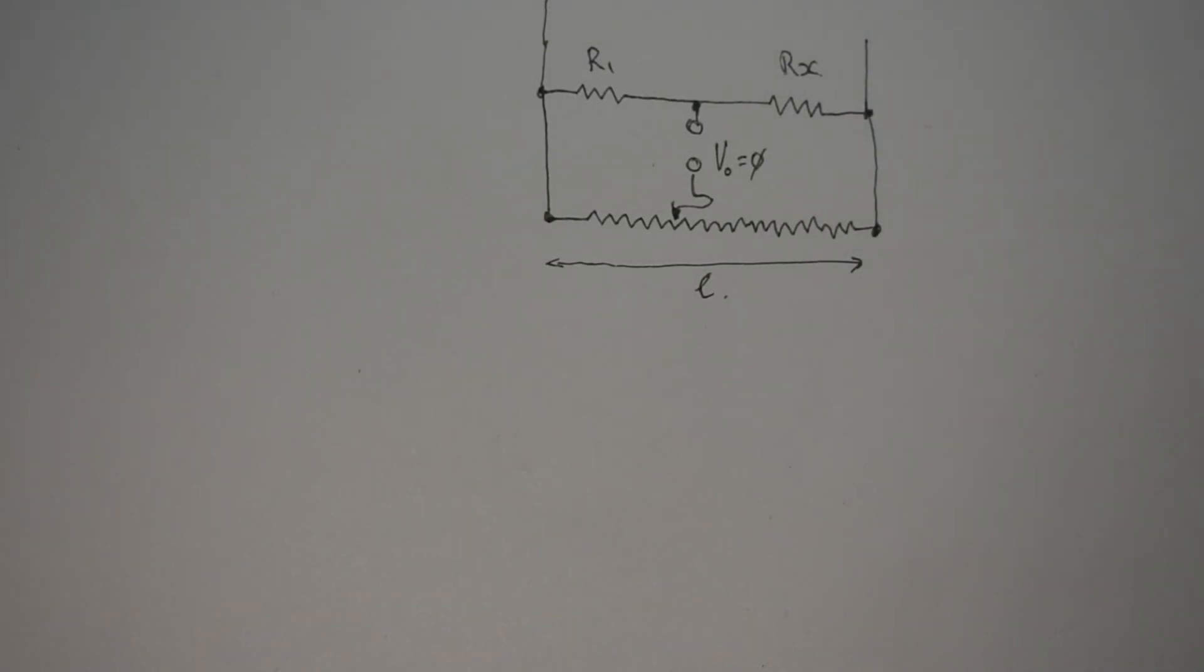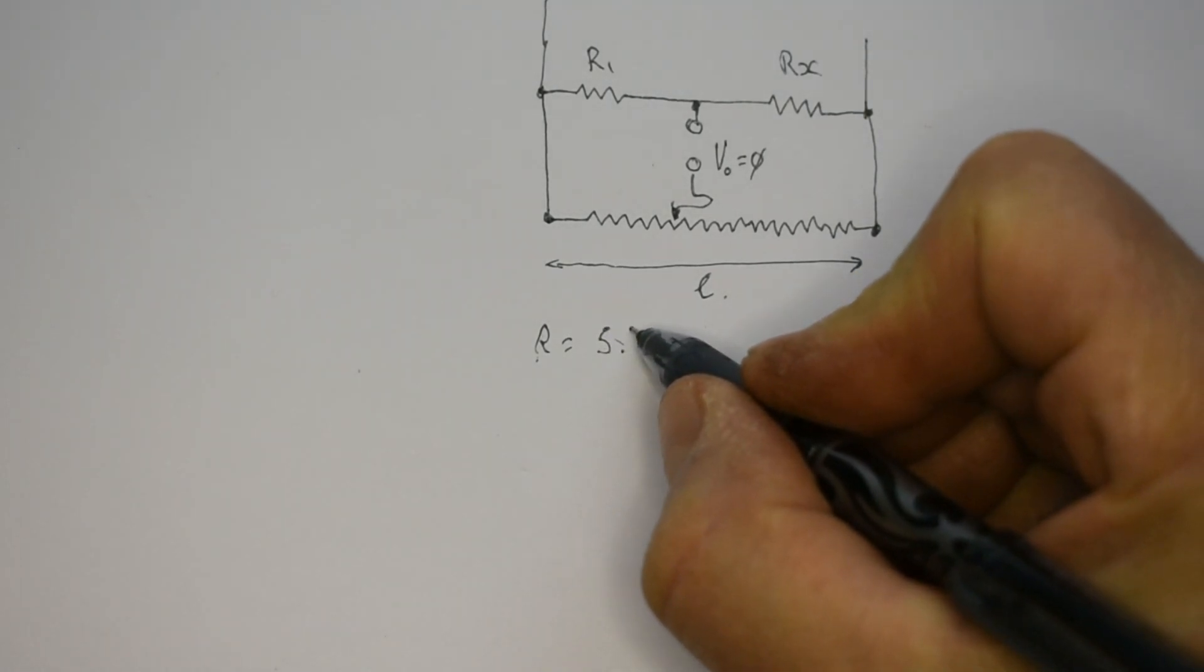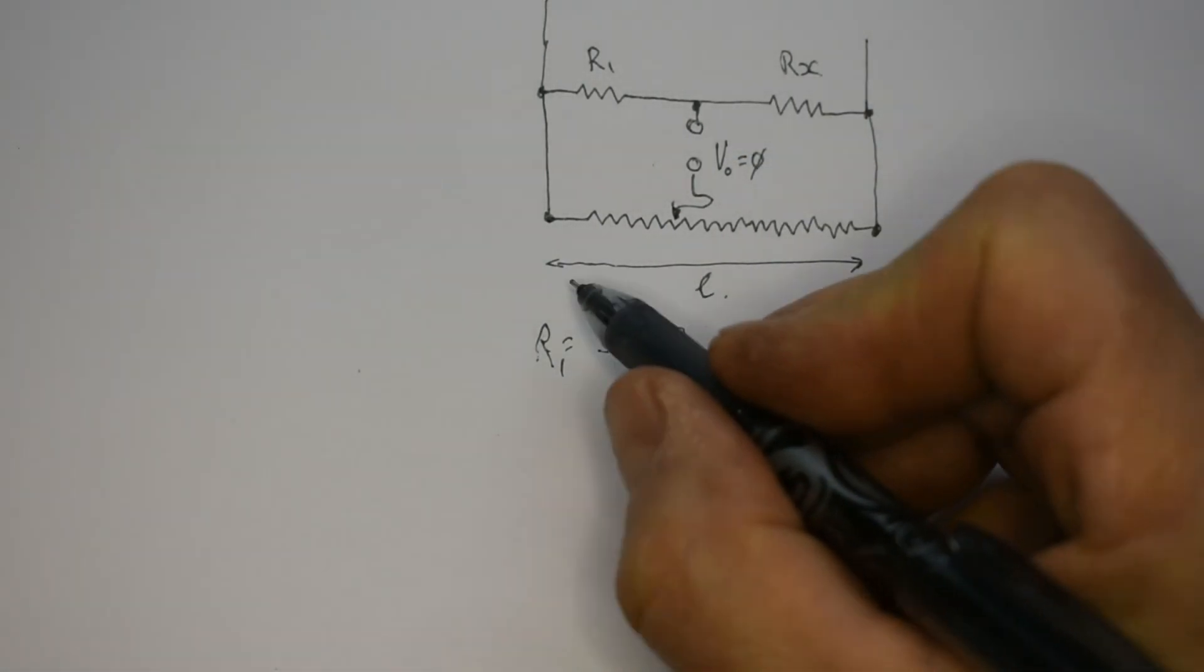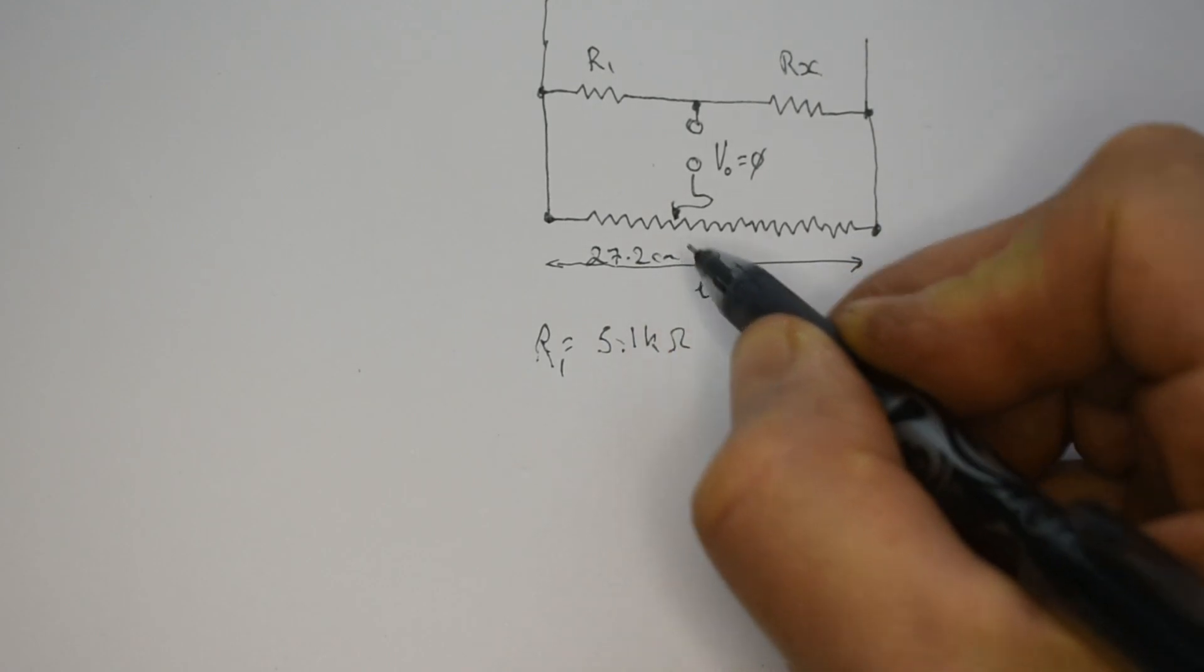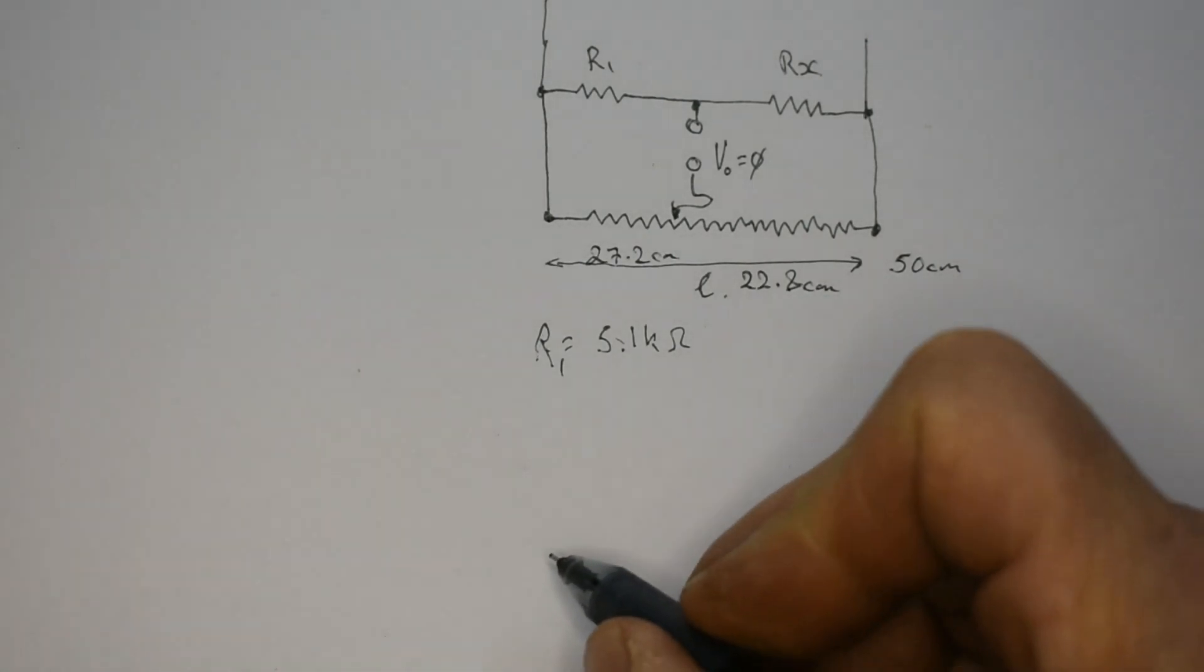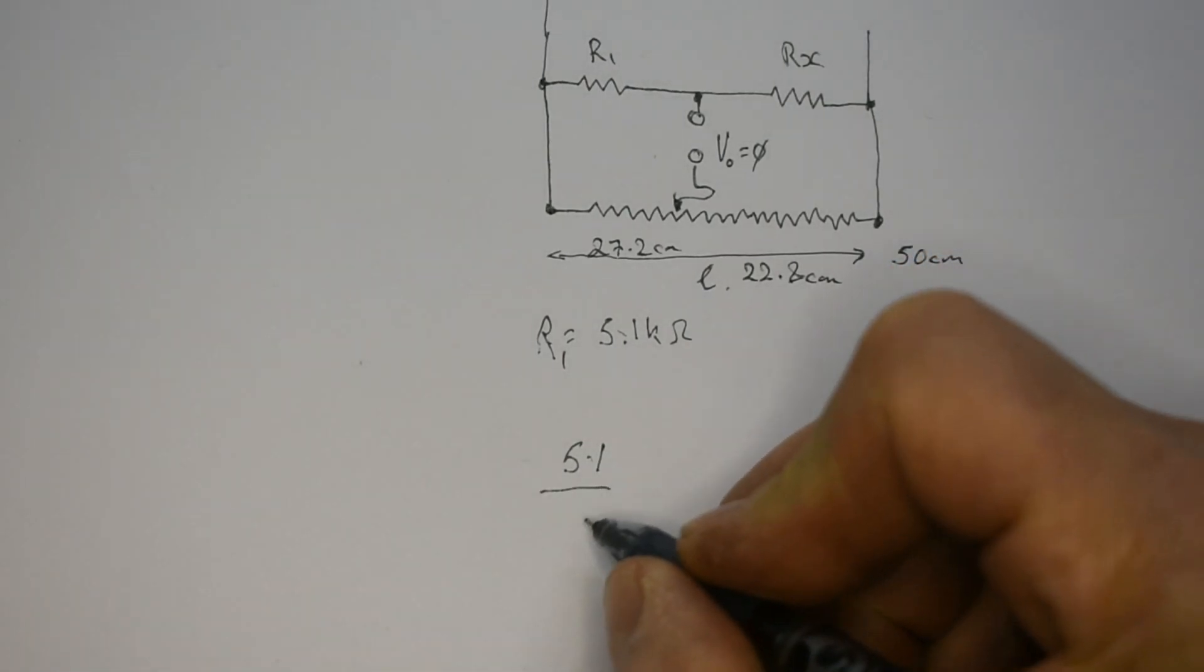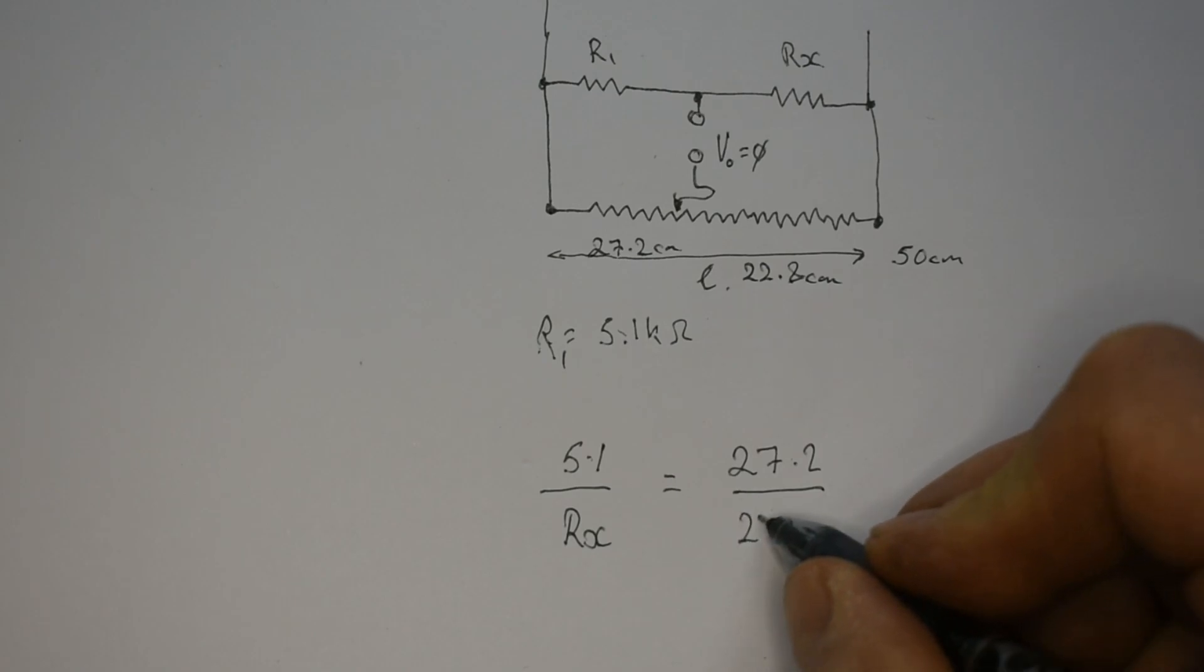Okay, I've redrawn the diagram. So it's the same layout as the bridge. It's the same one, just turned around. So we've got R1, which we know is R1 is equal to 5.1k ohms. And we know we've set this balance for zero. And when we've got it for zero, we know our length for this portion is 27.2 centimeters. We know this is total of 50 centimeters. So our difference here for the other part is 22.8 centimeters. Therefore, we can say then effectively that...